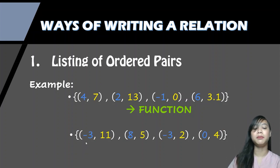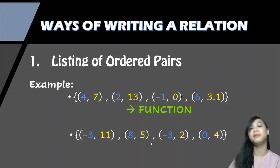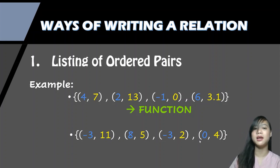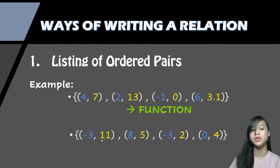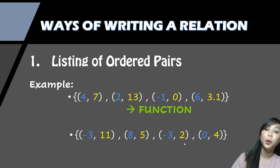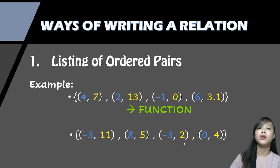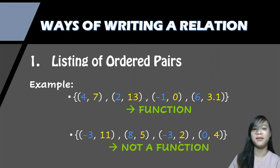Another example of ordered pairs: (negative 3, 11), (8, 5), (negative 3, 2), and (0, 4). As you can see, negative 3 corresponds to two values of y — 11 and 2. So this example is not a function.